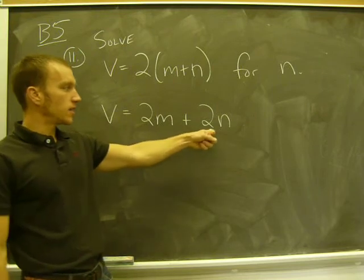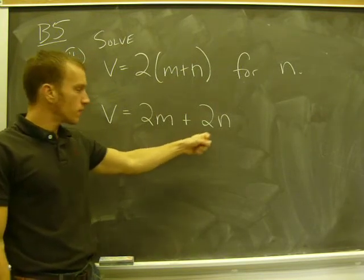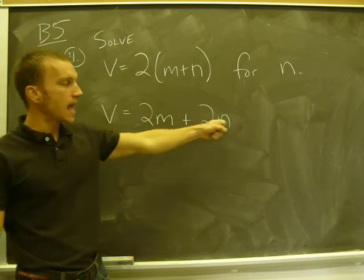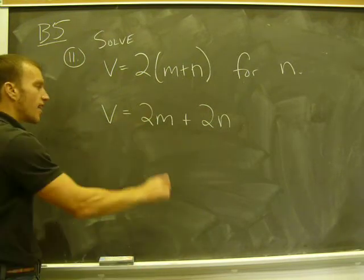Okay, so again I'm trying to get the n term by itself, so first I've got to get rid of the m term. Because it's added to the n term, I've got to subtract 2m from both sides.